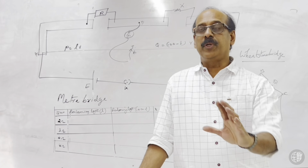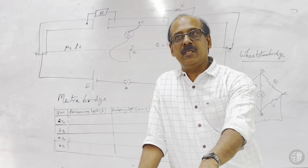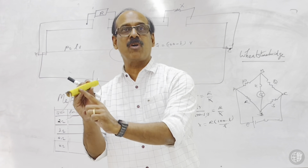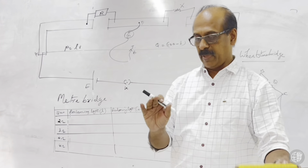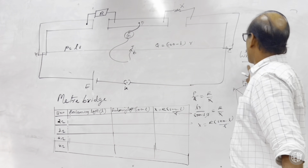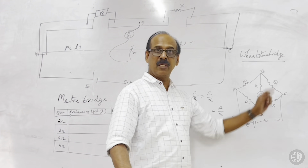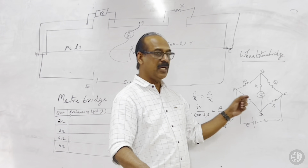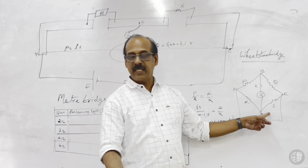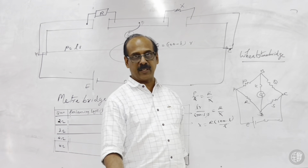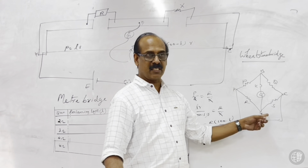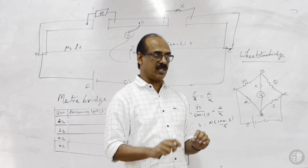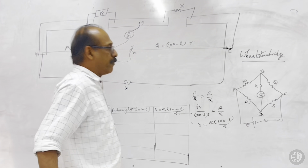Today we discuss the meter bridge — a device used to determine the unknown resistance of a wire. This meter bridge works on the principle of the Wheatstone bridge. In a Wheatstone bridge, four resistances P, Q, R, and S are connected with a galvanometer in the middle branch. When we adjust P, Q, and R with S constant, we reach a balancing condition.